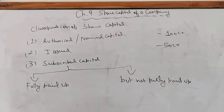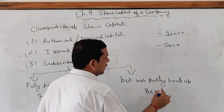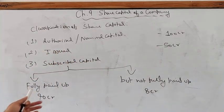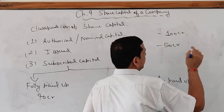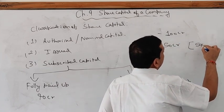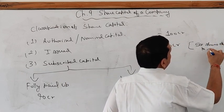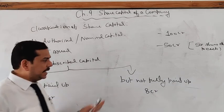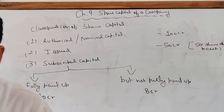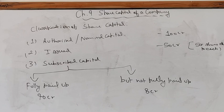For example, out of 50 crores of issued capital, 40 crores has paid the full amount — this is shown as fully paid up. Out of the remaining 10 crores, only 8 crores has been received, so subscribed but not fully paid up capital is 8 crores. To show this: if issued capital is 50 crores — say 5 crore shares of rupees 10 each — 40 crores fully paid is shown under fully paid up. This is how it is described on the balance sheet. In the next class we will study the format of the company's balance sheet.